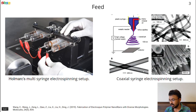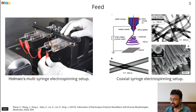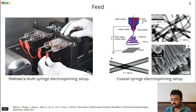There are different types of feed. On the left is the multi-syringe feed, which is used to scale up the production. On the right we have the coaxial type of feed, which is used to produce hollow carbon fibers.